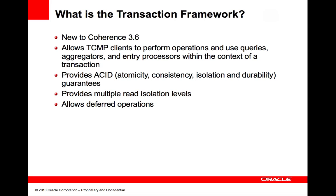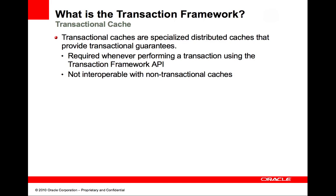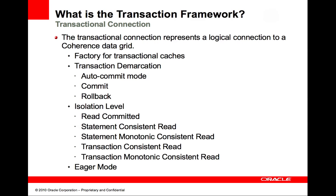It also provides multiple read isolation levels and deferred operations. The transactional framework provides transactional caches, which are a specialized form of distributed caches. Transactional caches are used whenever you would want to use Coherence in the context of a transaction. The transactional framework introduces a new transactional connection that represents a logical connection to a Coherence data grid. The connection acts as a factory for transactional cache instances. The transactional connection allows you to set autocommit mode. In autocommit mode, a transaction is scoped to a single operation.